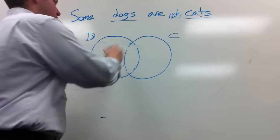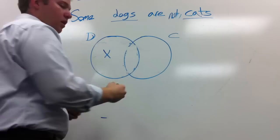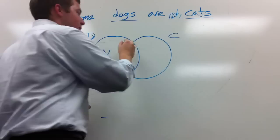For an O, we put an X. For an A, we shade this part. The same thing is true with E and I. For E statements, we shade this part. For I statements, we put an X in this part. But it's fundamentally the same.